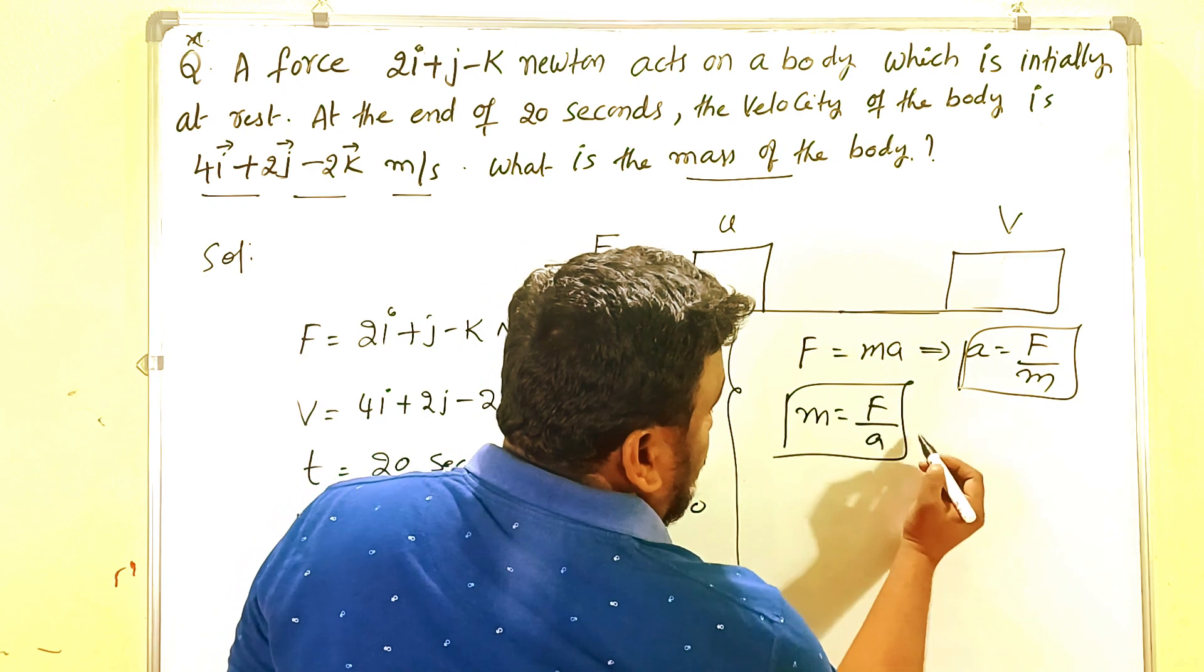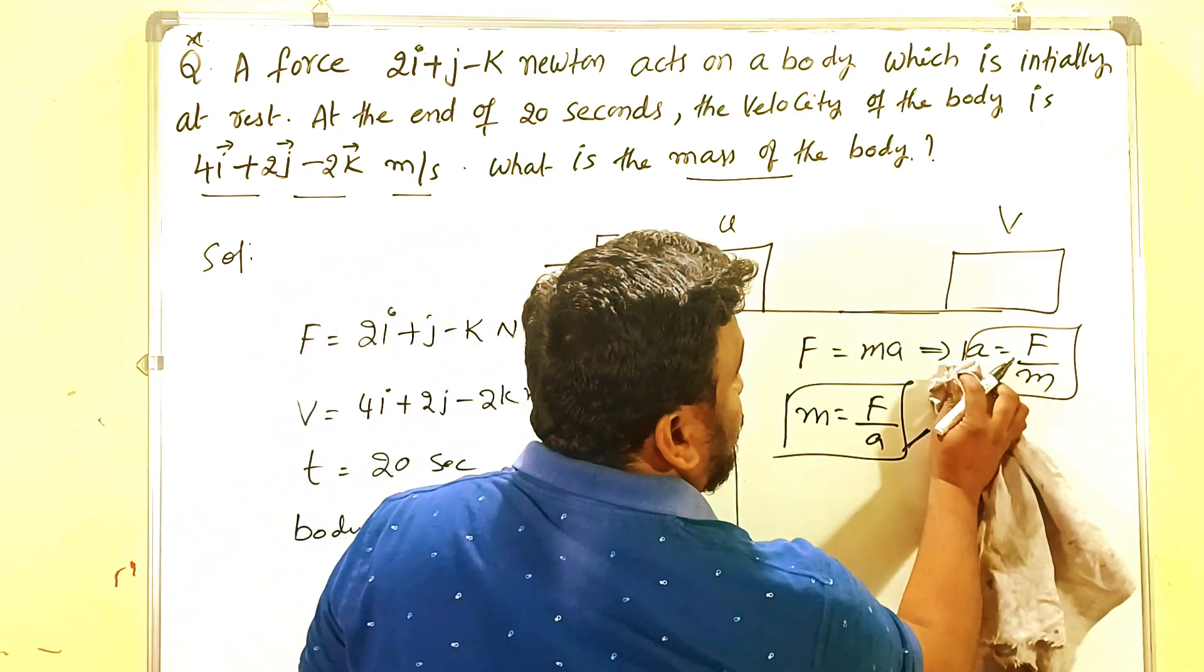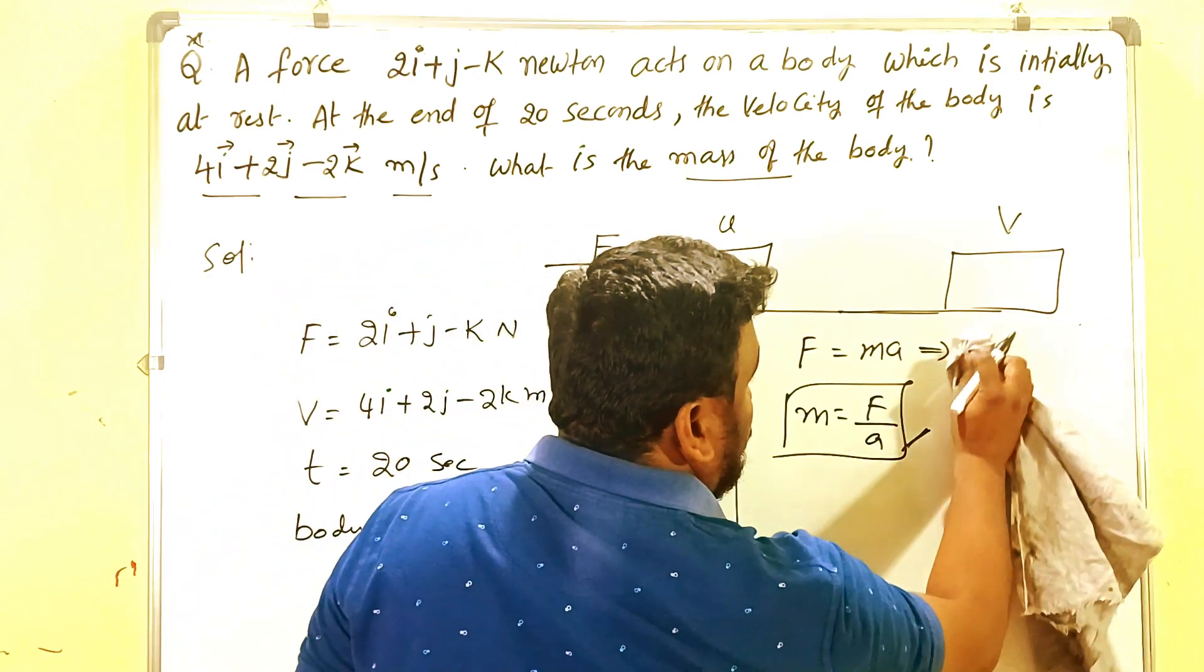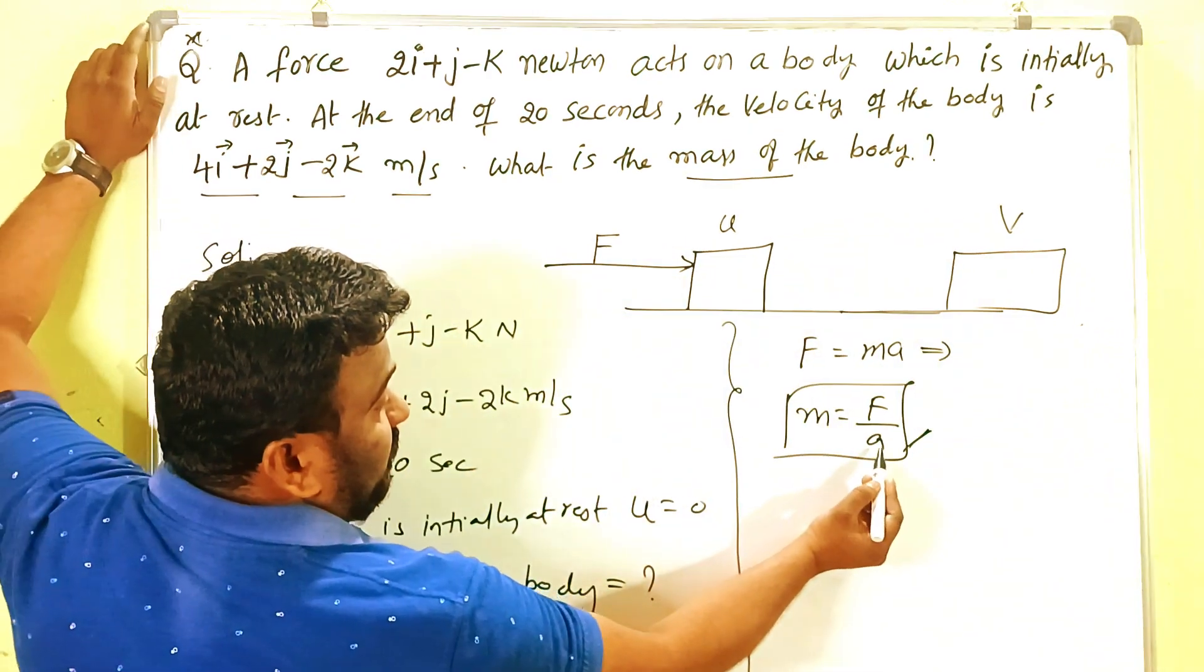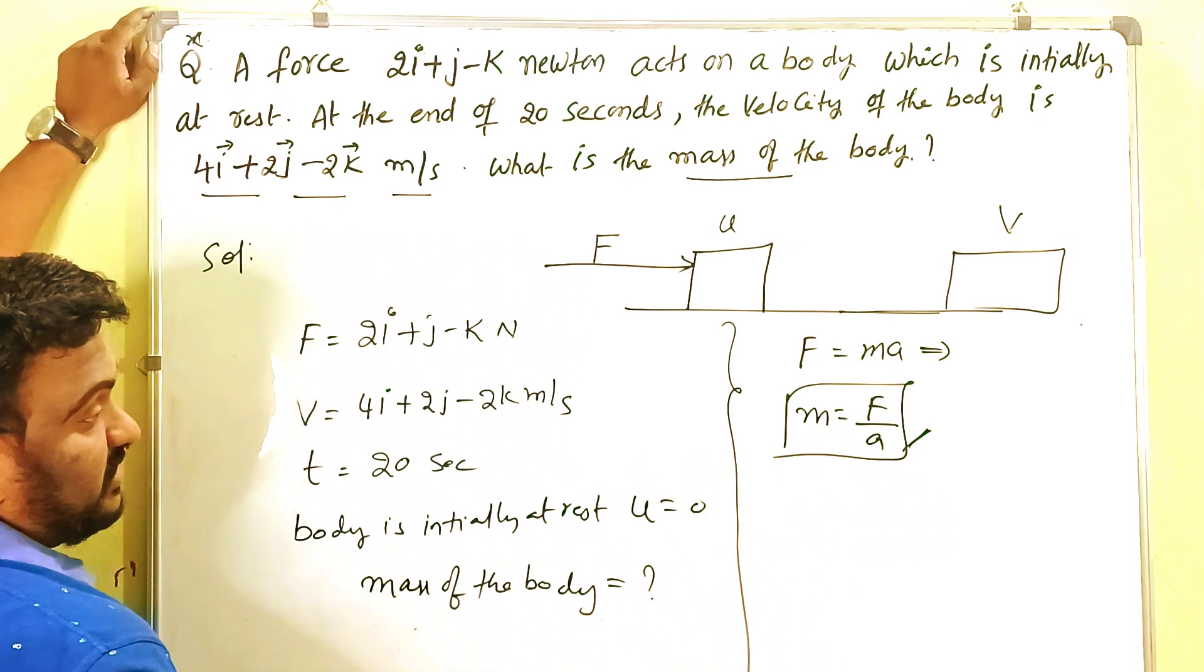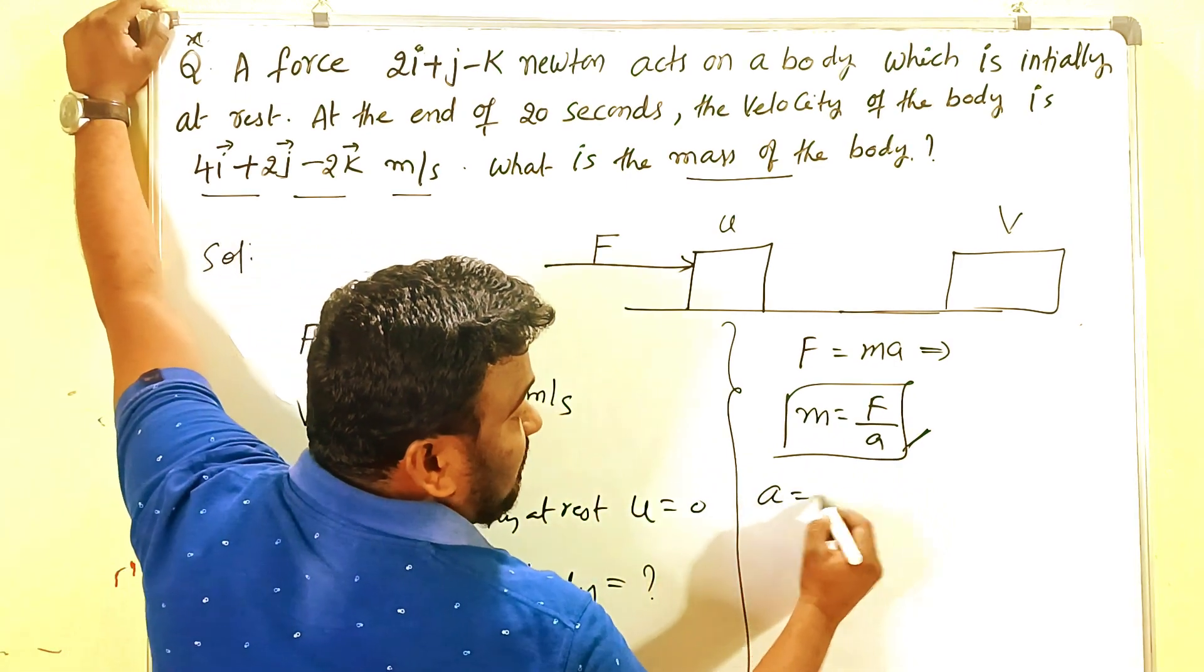Now we are going to use M equals F by A. How can we find out the acceleration? That's the question. Acceleration is nothing but change in velocity per time. This is the formula.